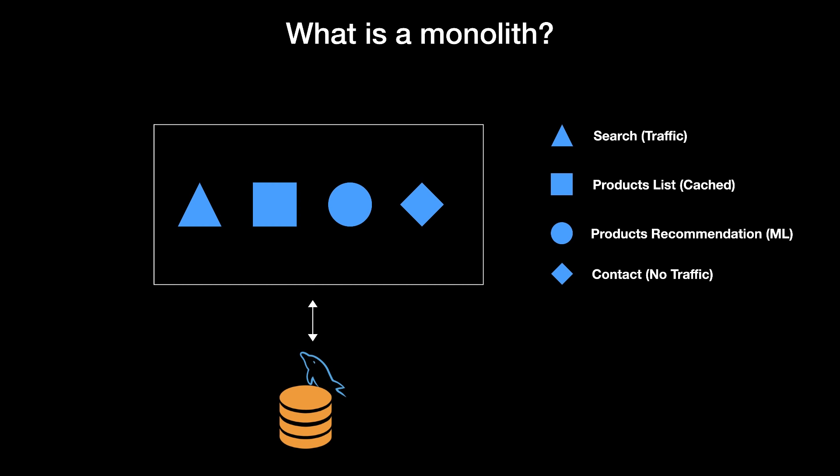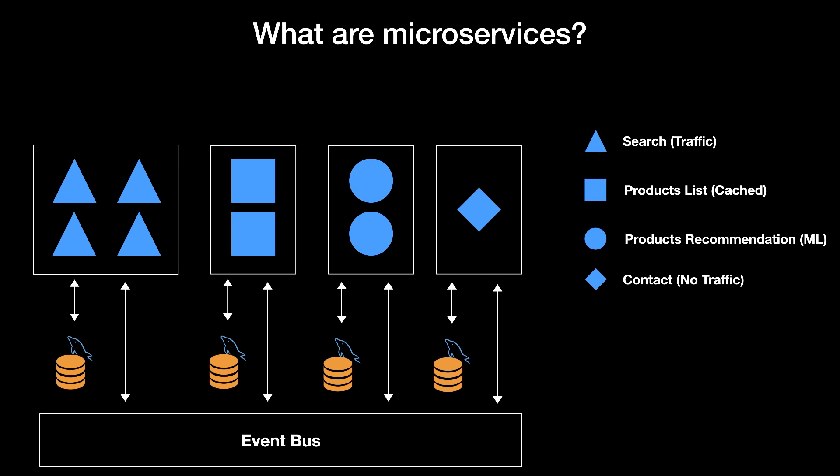We also have a contact page with less traffic. The problem with this architecture is when we want to scale it up — because search has a lot of traffic, we have to replicate all the functionalities. So we are also replicating parts of the code that have no traffic, like the contact page. Also, since it is one repository, there can be only one language, and you can cause problems with other teams if you change their code.